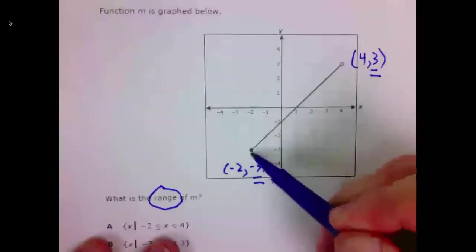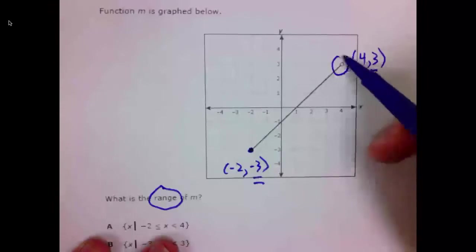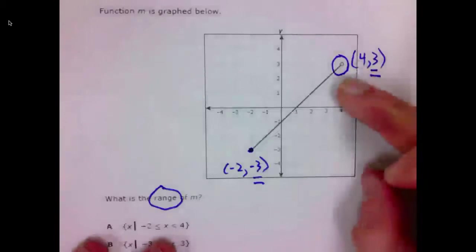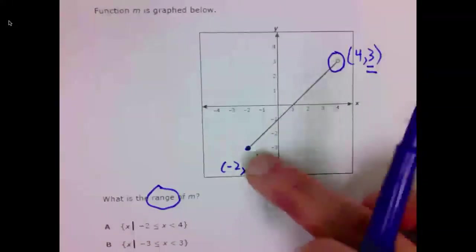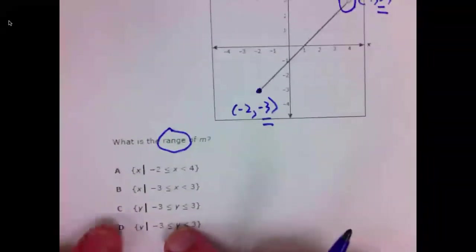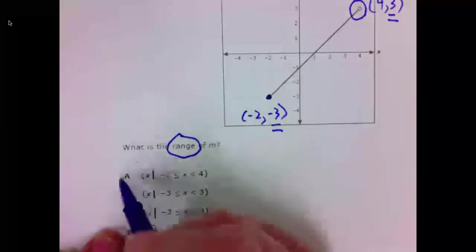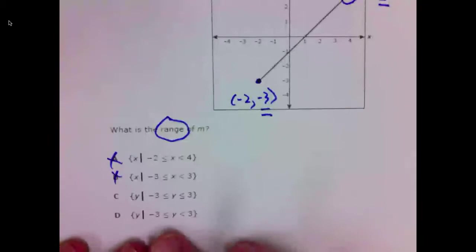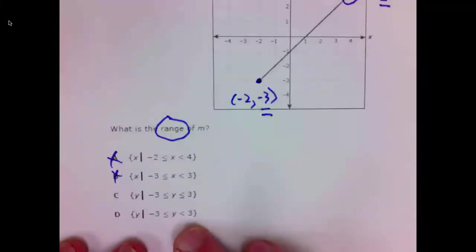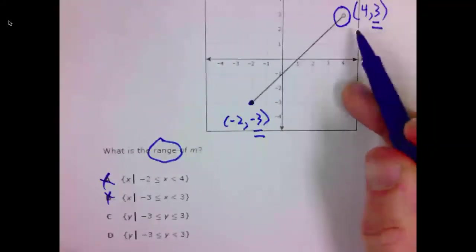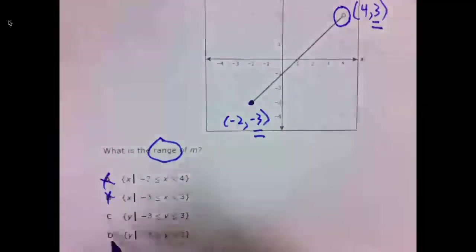But negative 3 is a closed point we need an equal to. Positive 3 is our open point. Thus, positive 3 will be a strictly less than. Negative 3 will have the equal to with it. First of all, range being Y, we can certainly eliminate A and B, the two X's. We know it's going to be from negative 3 to 3, where negative 3 gets the equal, but positive 3 does not because of the open point. 7 is D.